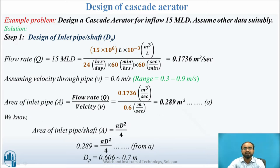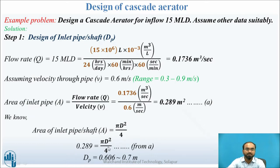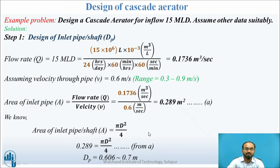Now we know the area, so we can calculate the diameter. Since the area of a pipe is πD²/4, we set 0.289 = πDp²/4, giving Dp = 0.606 meters. We round up to an equivalent value of 0.7 meters. So the diameter of the inlet pipe or inlet shaft is 0.7 meters.